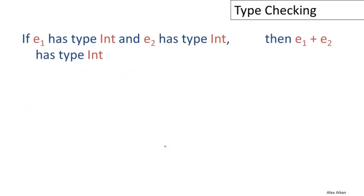Now consider the following simple type rule: if E1 has type int and E2 has type int, then E1 plus E2 also has type int.